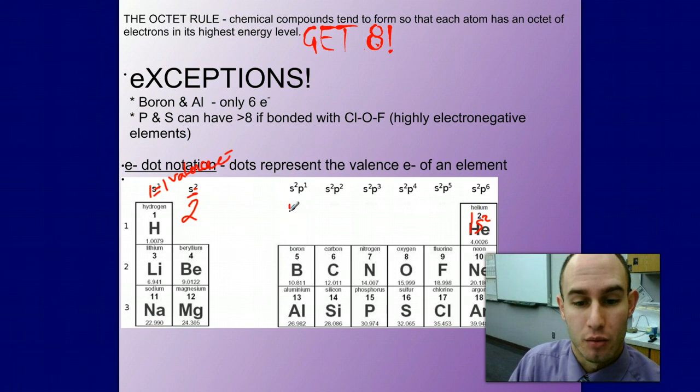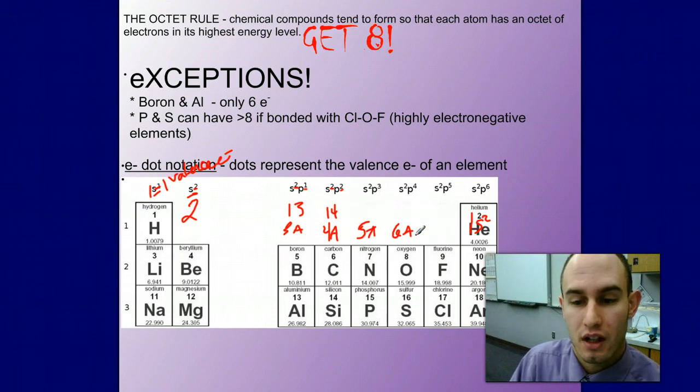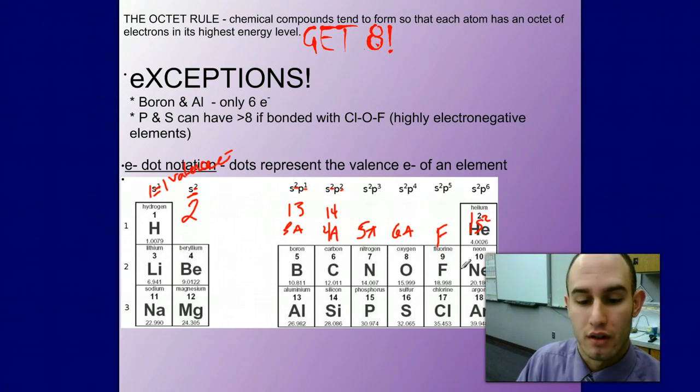Boron is in group 13 or group 3A and it has 3 valence electrons in its outermost energy level. Group 14 or 4A has 4 valence electrons. 5A, 6A - oxygen has 6 valence electrons, fluorine has 7, and our noble gases over here all have 8.